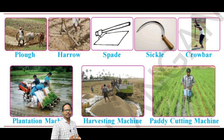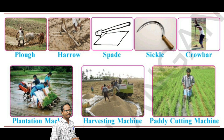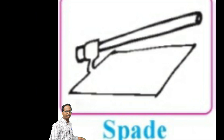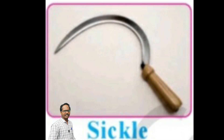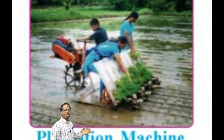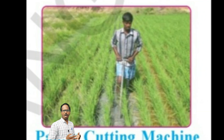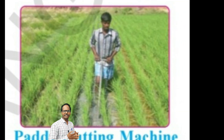What are the tools used for cultivation? Equipment plays an important role in cultivation. We need to use different farm equipment in the different stages of cultivation, such as: plow, harrow, spade, sickle, crowbar, plantation machine, harvesting machine, and paddy cutting machine.